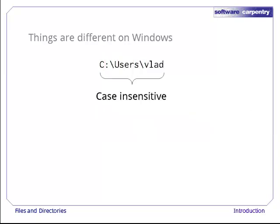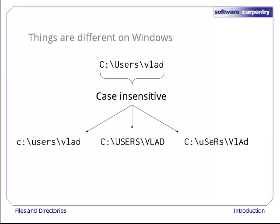Finally, Windows file names and directory names are case-insensitive. Upper and lower case characters mean the same thing. This means that the path name c colon users vlad could be spelled in 1024 different ways.